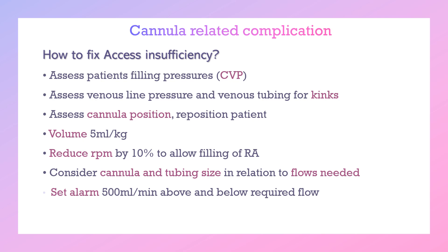If we face access insufficiency, the first step is to assess the patient — assess volume status regarding filling pressure such as CVP and CVP trending. Assess the tube for kinking, and assess the cannula position. If the patient is sitting and the cannula is femoral, make them more flat to allow easier drainage. Give volume, 5 mL/kg, and decrease speed by 10% to allow filling of the right atrium. From the start, consider appropriate tube and cannula size in relation to required flow, and set low and high alarms 500 mL/min above and below the required flow.